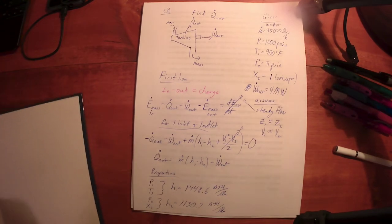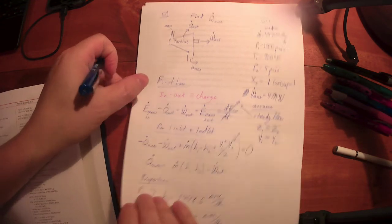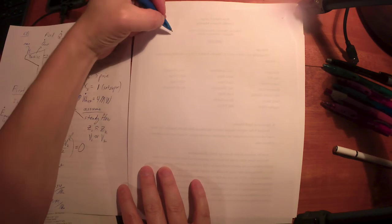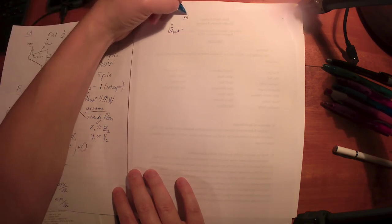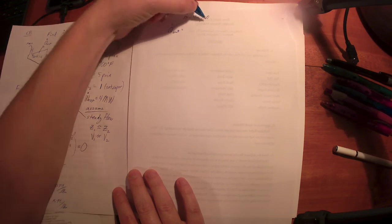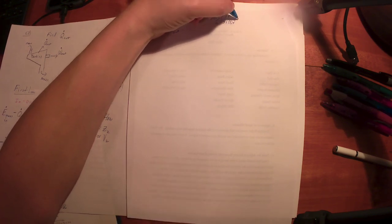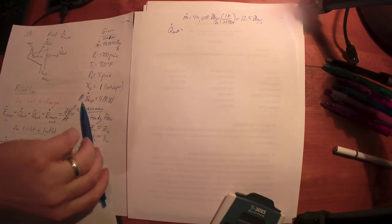Now it's just conversion factors. I know H's. I've got the M dot value. So my heat rate out is going to equal my M dot. Now, remember M dot, we said it was 45,000 pound mass per hour. Multiply that by one hour for every 3600 seconds. I've got 12.5 pound mass per second. I'm going to fill this out. And we'll start the next video there.